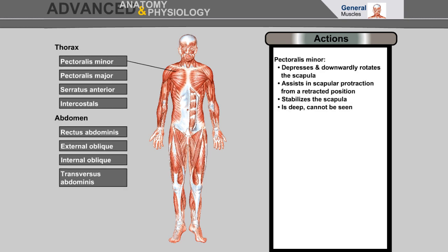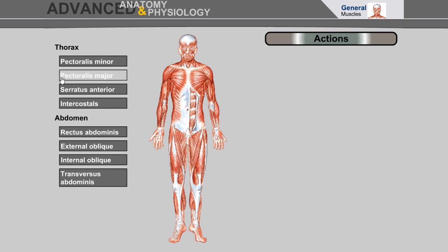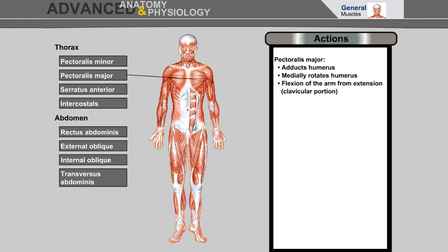Pectoralis minor depresses and downwardly rotates the scapula, assists in scapular protraction from a retracted position, stabilizes the scapula, and is deep and cannot be seen. Pectoralis major adducts the humerus, medially rotates the humerus, and flexion of the arm from extension. Serratus anterior protracts the scapula, stabilizes the scapula, and assists in upward rotation.